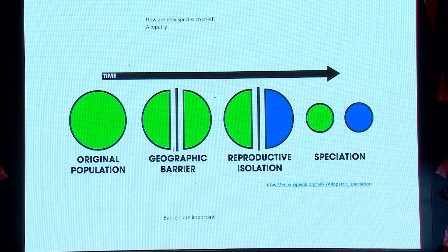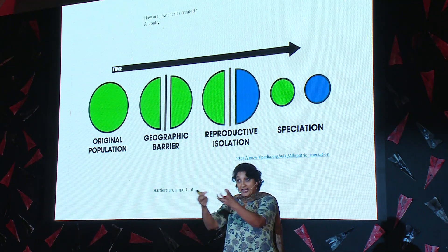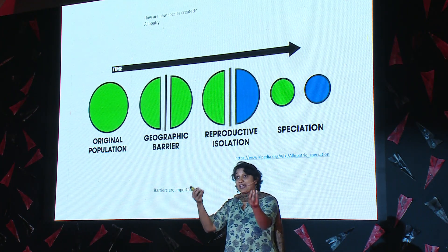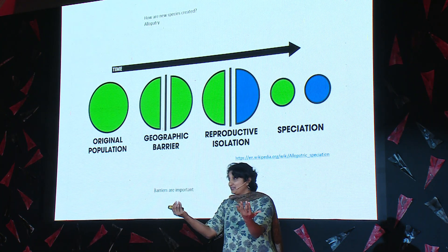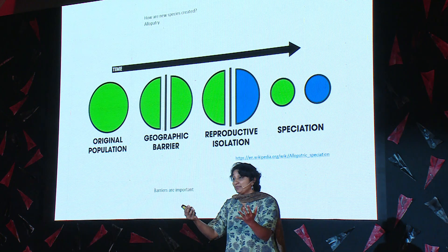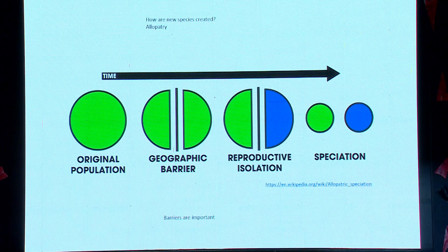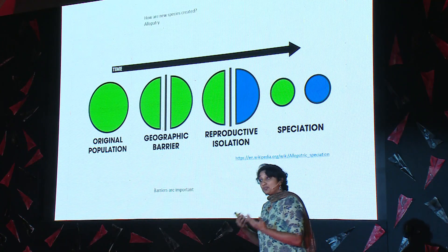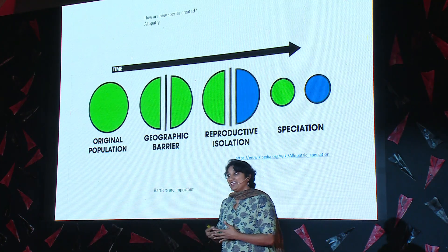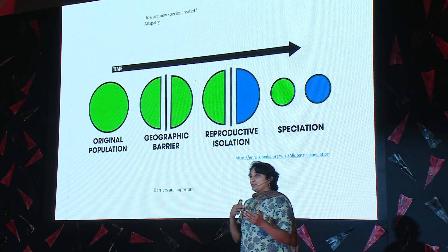What is allopatry? It's a simple process. You have one population, and for some reason there's a barrier that splits it into two areas. These two populations — the animals or plants that live in them — don't see each other, they don't exchange genes for a very long time, and eventually they become different enough that if they were to meet, they wouldn't be able to mate or breed with each other. At that point, you have two species instead of one. What's most important here is the presence of barriers.